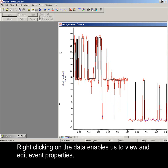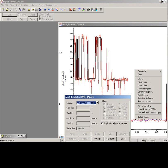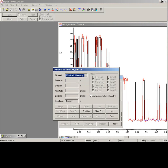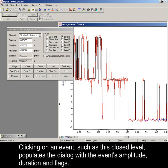Right-clicking on the data enables us to view and edit event properties. Clicking on an event, such as this closed level, populates the dialog with the event's amplitude, duration and flags.